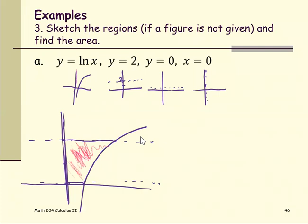So this graph confirms what we did by hand. Our goal is to find the area bounded by these four curves. If we try to set this up with respect to x — placing a vertical bar — we would have two regions, A and B. The above boundary is always y=2, but the lower boundary changes: for region A it's y=0, and for region B the lower boundary shifts to the curve y equals natural log x.